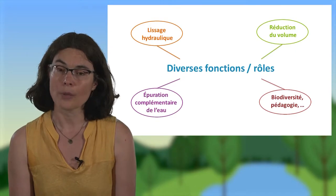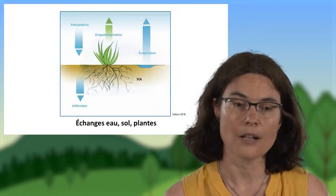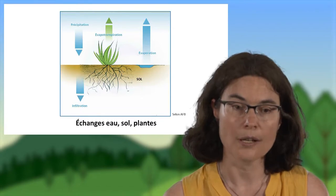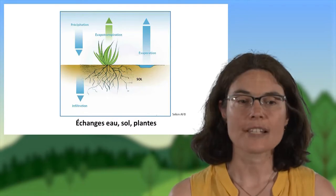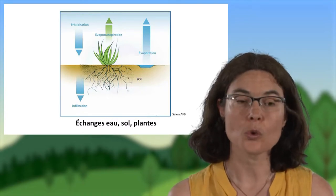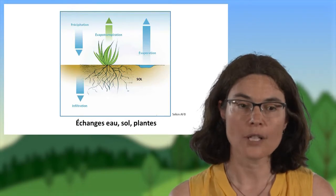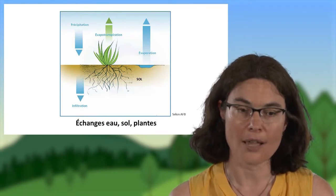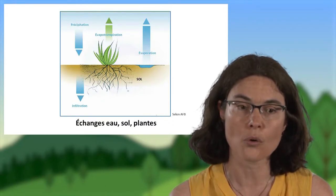Elles vont par ailleurs permettre de réduire le volume des effluents. En effet, au sein de ces zones, différents phénomènes vont se mettre en place : l'infiltration sous le sol, et l'évapotranspiration liée aux végétaux qui s'y installent. Les volumes sont ainsi réduits en sortie de zone de rejet. Cela est intéressant lorsqu'on a un cours d'eau récepteur avec des débits très faibles l'été et que l'on souhaite réduire les volumes d'effluents rejetés durant cette période.